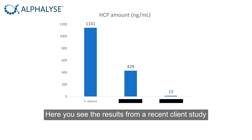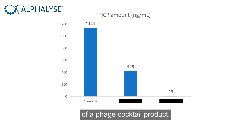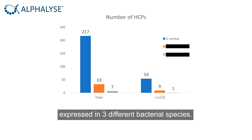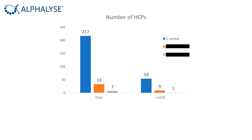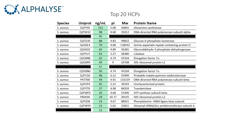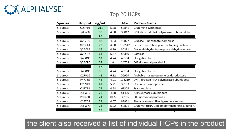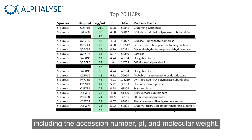Here you see the results from a recent client study of a phage cocktail product. The final drug product consisted of six bacteriophage drug substances expressed in three different bacterial species. Besides the total HCP quantity in nanograms per ml, the client also received a list of individual HCPs in the product, including the accession number, PI, and molecular weight.